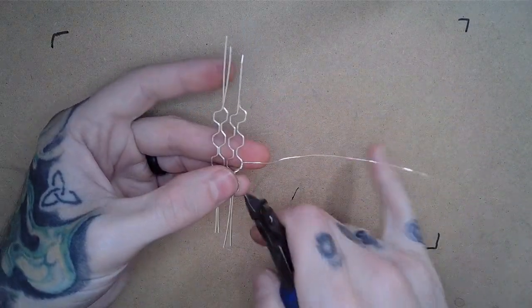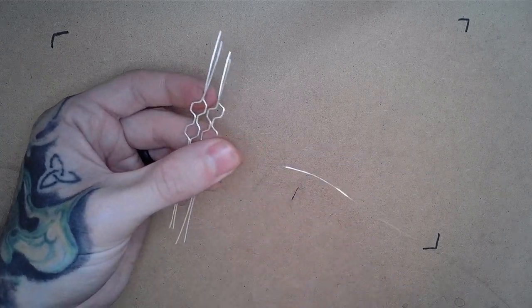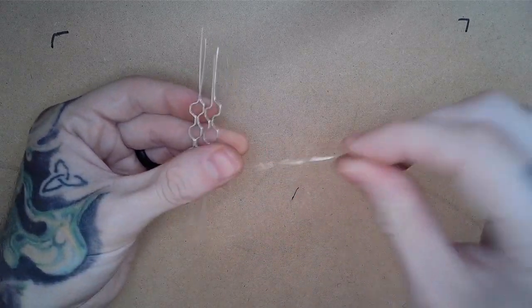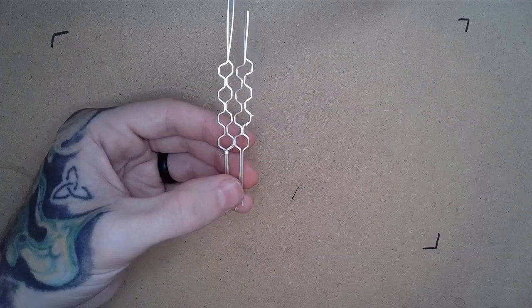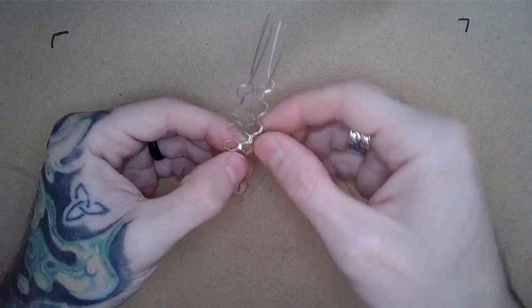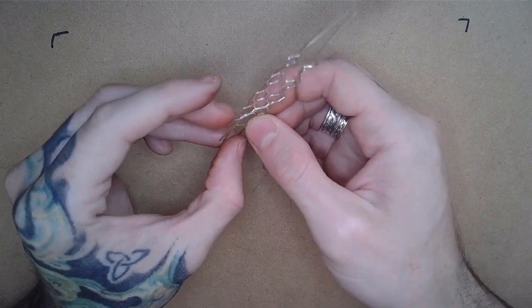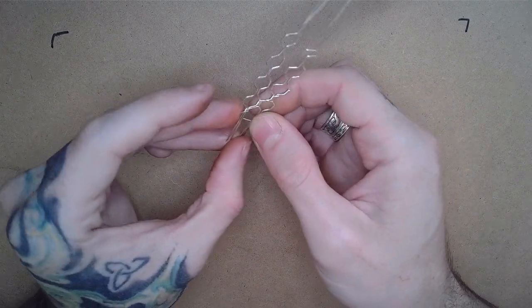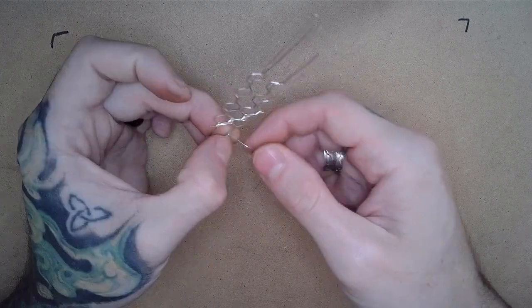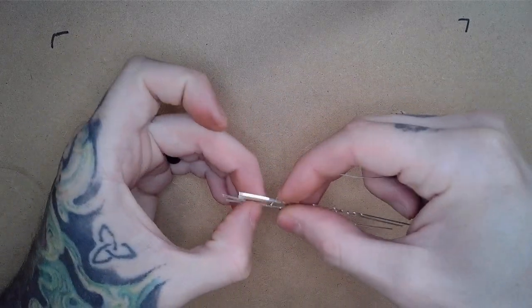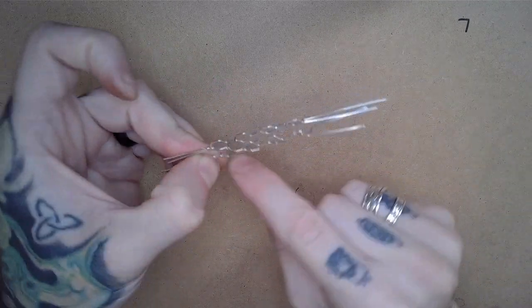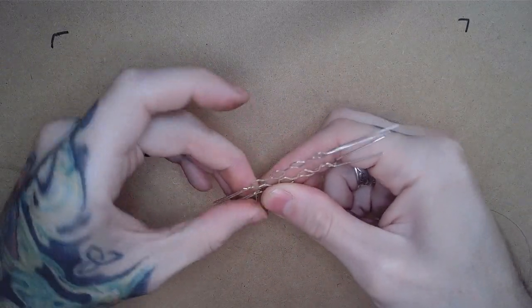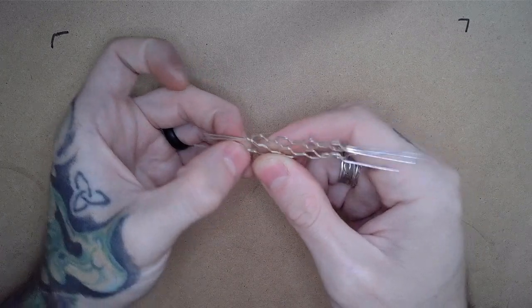From here I can cut our 28 gauge off and begin the next set of connections. I'm going to go ahead and just jump down to the bottom and connect our hexes here on the bottom right by wrapping around both of them three times, just how we started our first two wires.